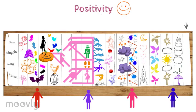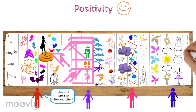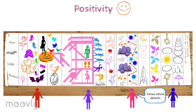One participant shares that he thinks the various colors represent the different types of personalities in the team, who can all learn from each other. Someone else adds that he likes the various natural elements in the drawing, just like the natural way in which the team communicates.